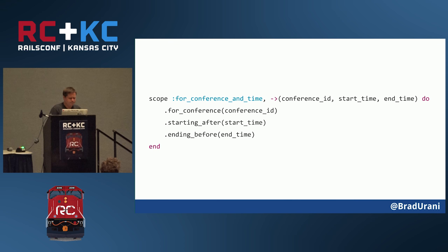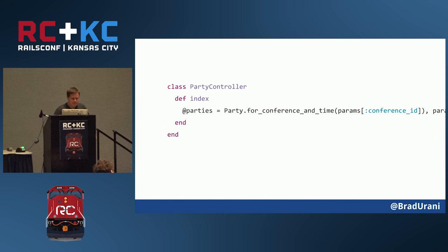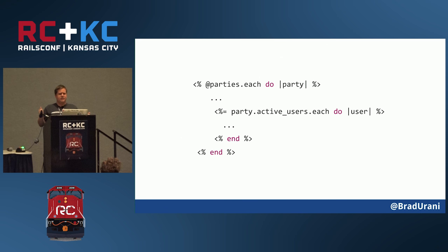ActiveRecord looks nice. We've got has_many users and a scope for active users, and on the user we've got an active scope. In the controller we call the scope for conference and time — standard Rails. Then in the view I do parties.each, and for each party I do party.active_users, display the list of parties, and display the users for each one.